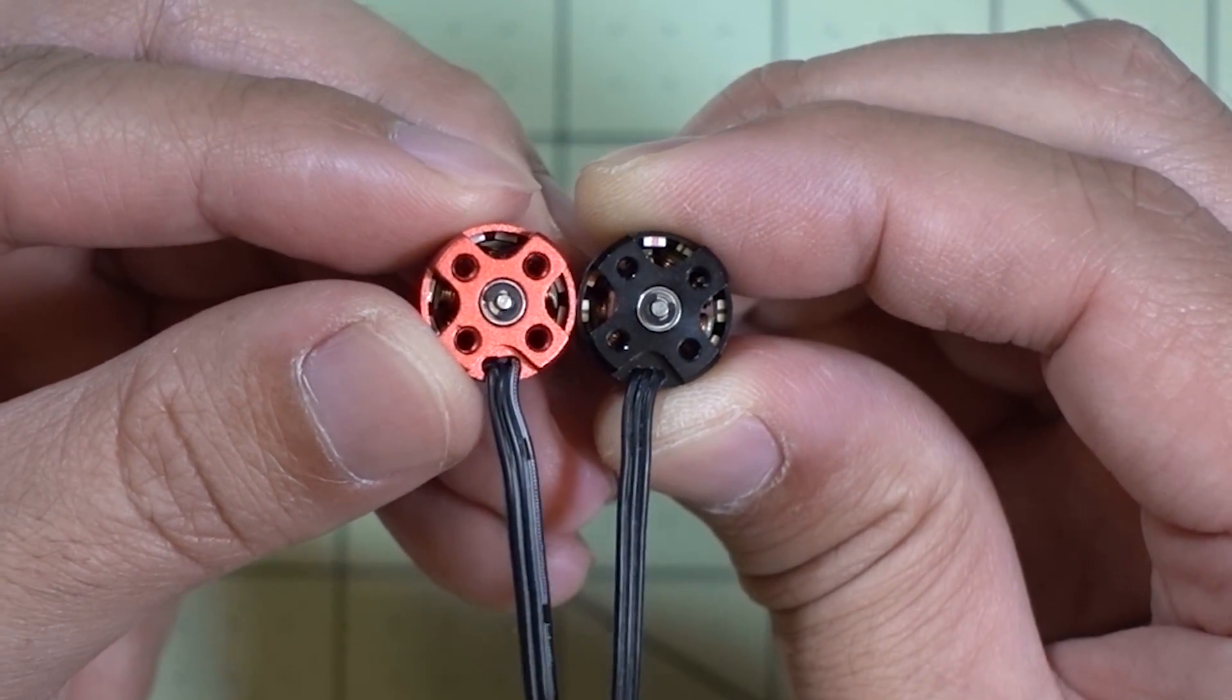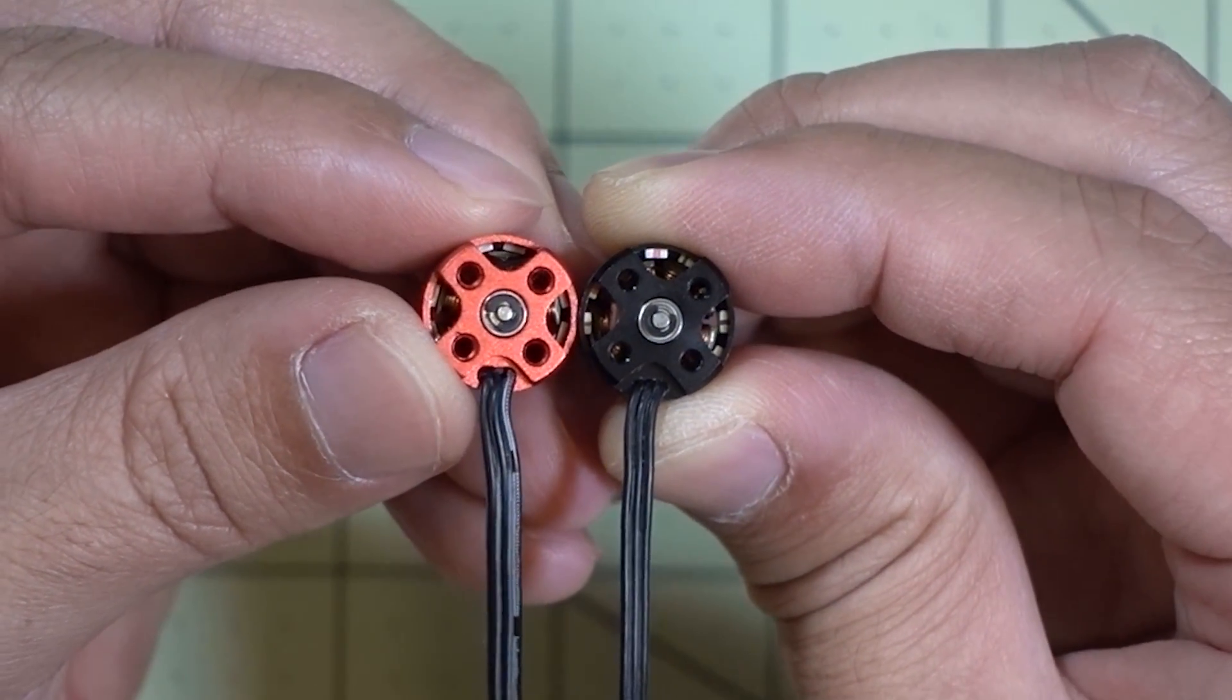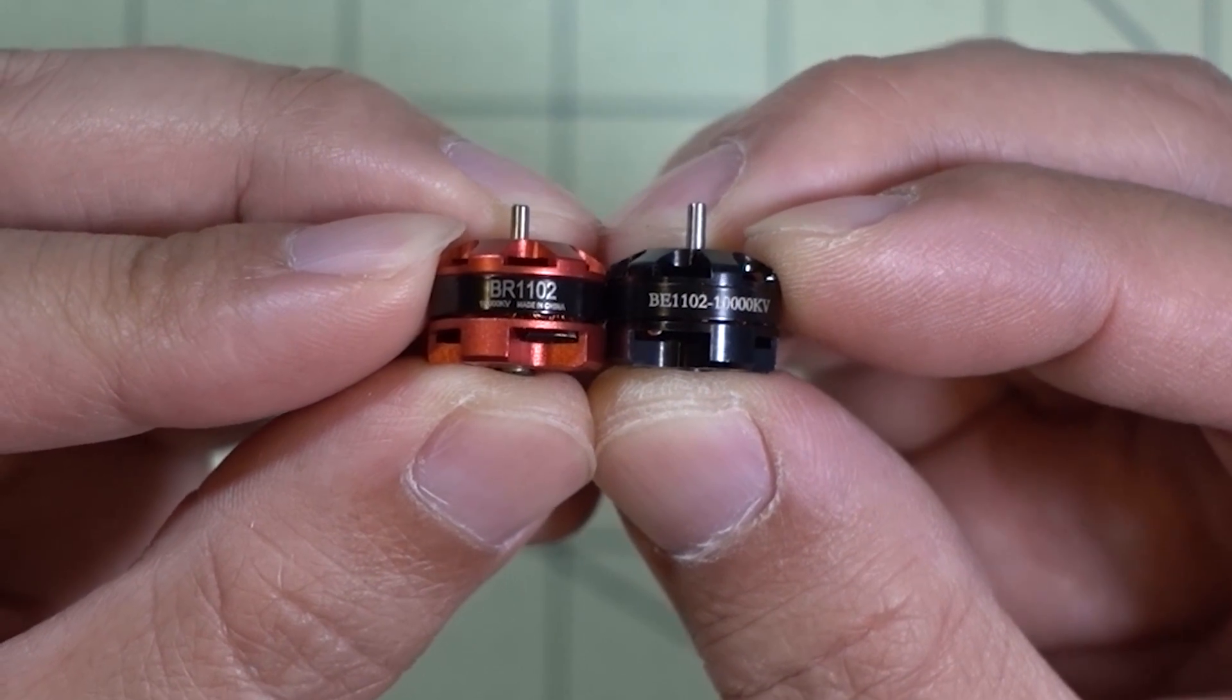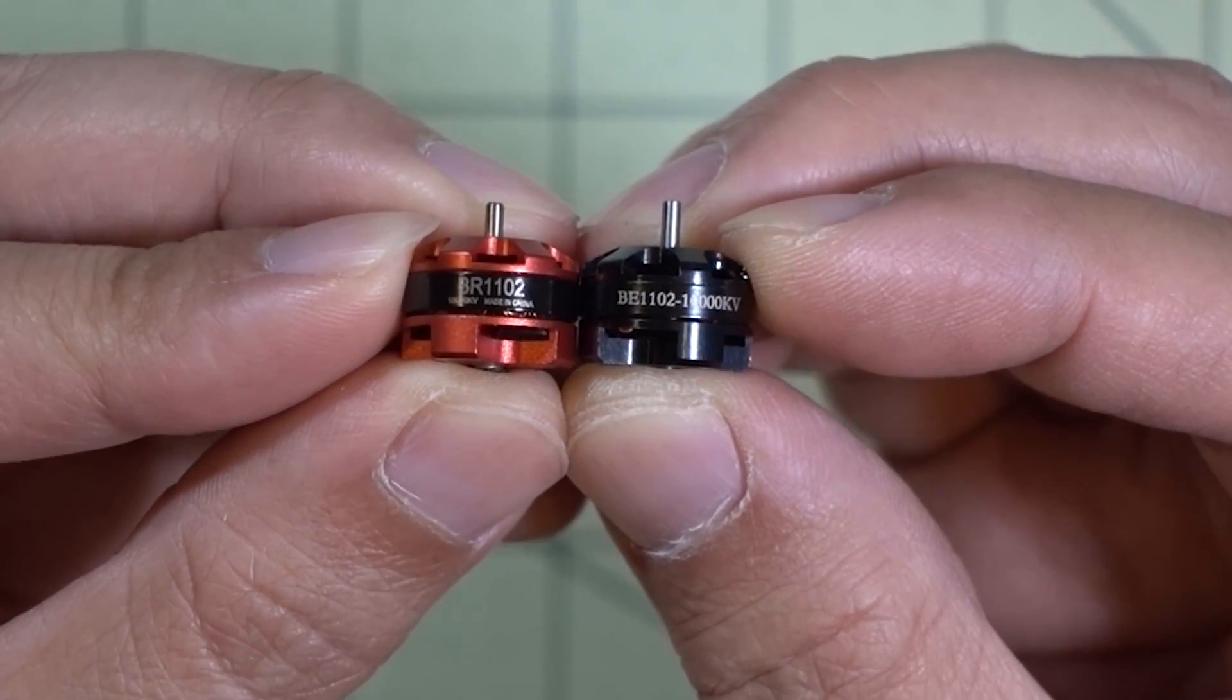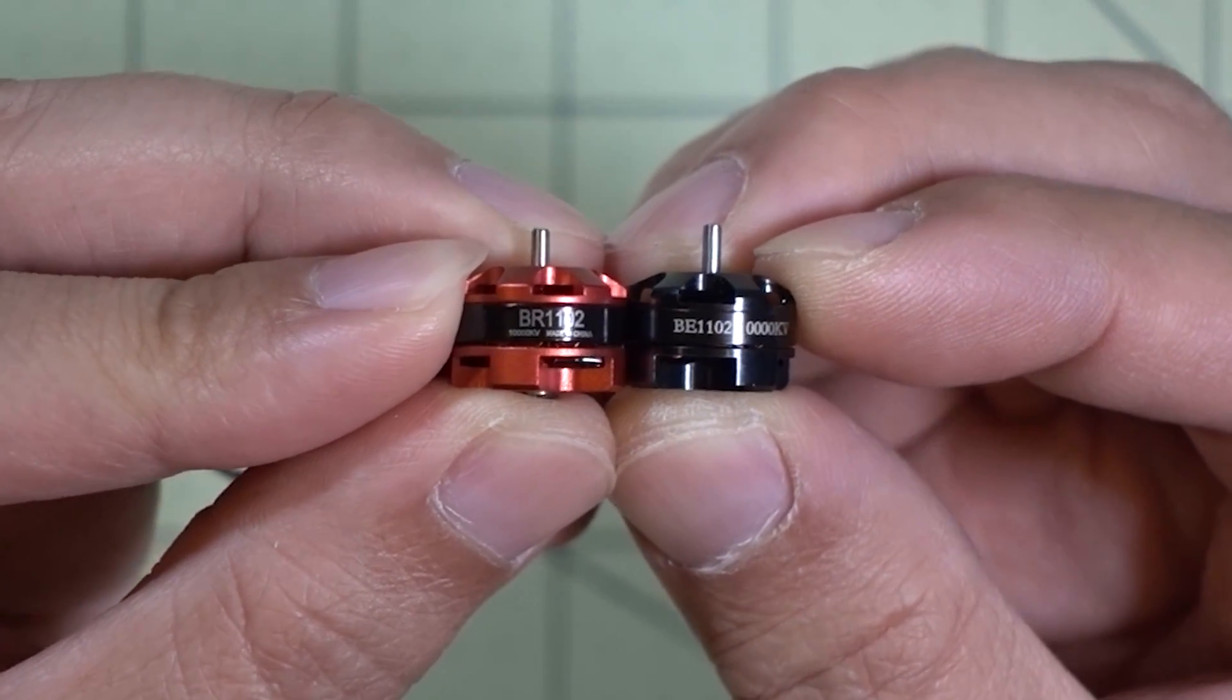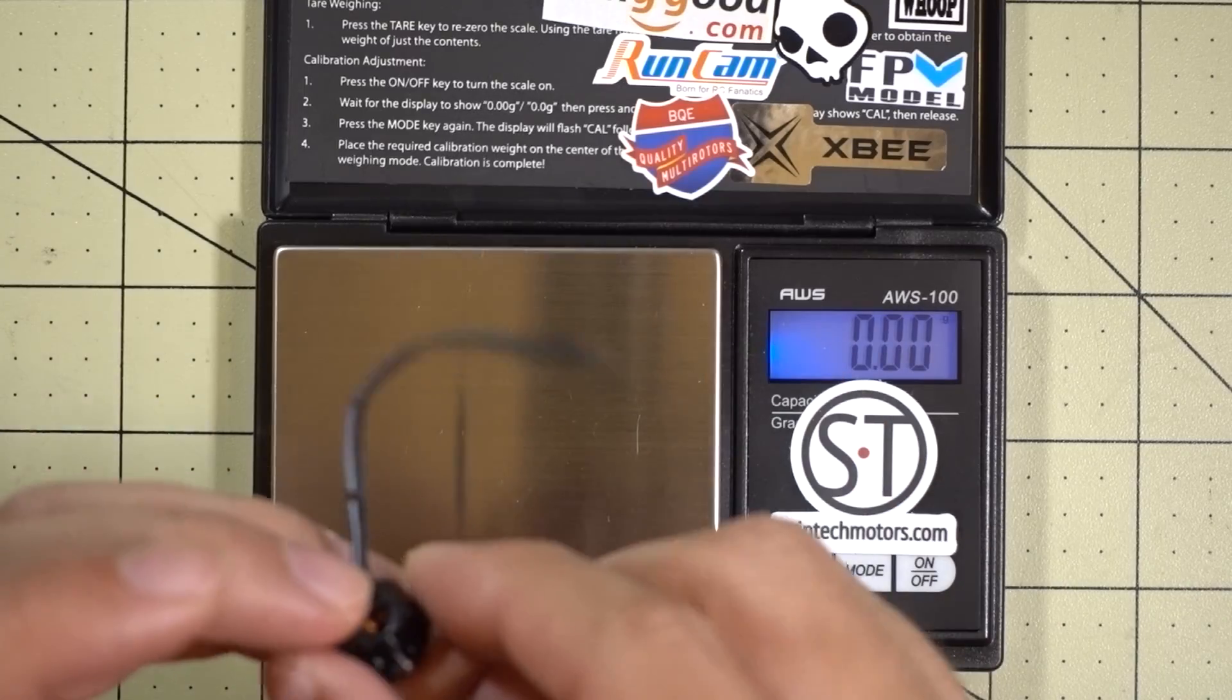And here's a look at it from the side, and again very hard to distinguish the two other than the color difference obviously. Let's see what the weight difference is. I think the DYS is probably a little bit more, it's got a little bit more motor wire here.